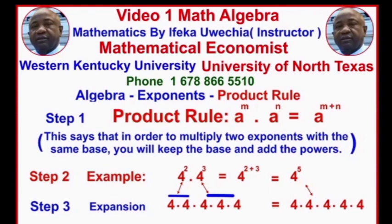This says that in order to multiply two exponents with the same base, you will keep the base and add the powers.